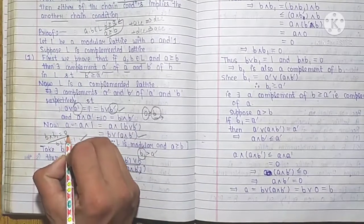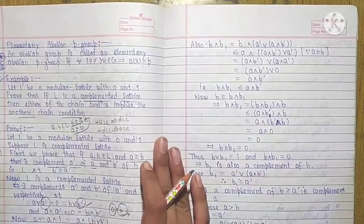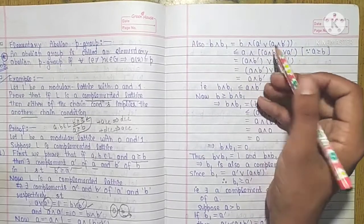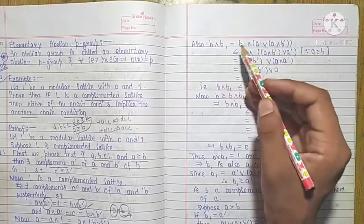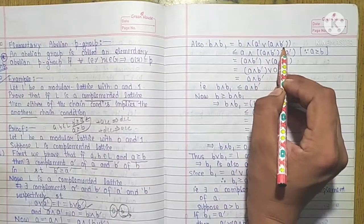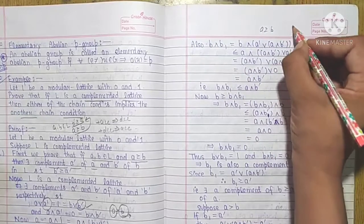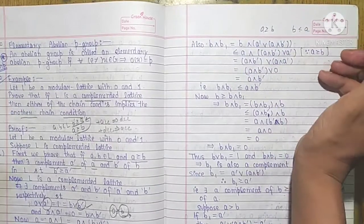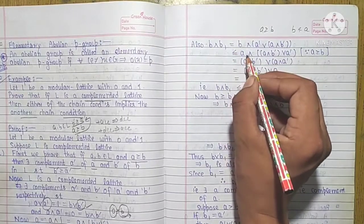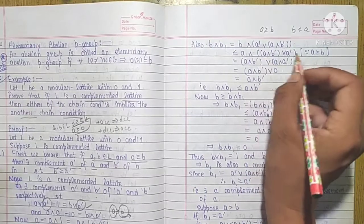Now we need to find B∧B1 and show it equals 0. We substitute the value of B1 into B∧B1. Since A ≤ B, we have B ≥ A, and using this relation — A is related to B means B ≤ A in the reversed sense — we apply it here. We also use the property of modular lattice.